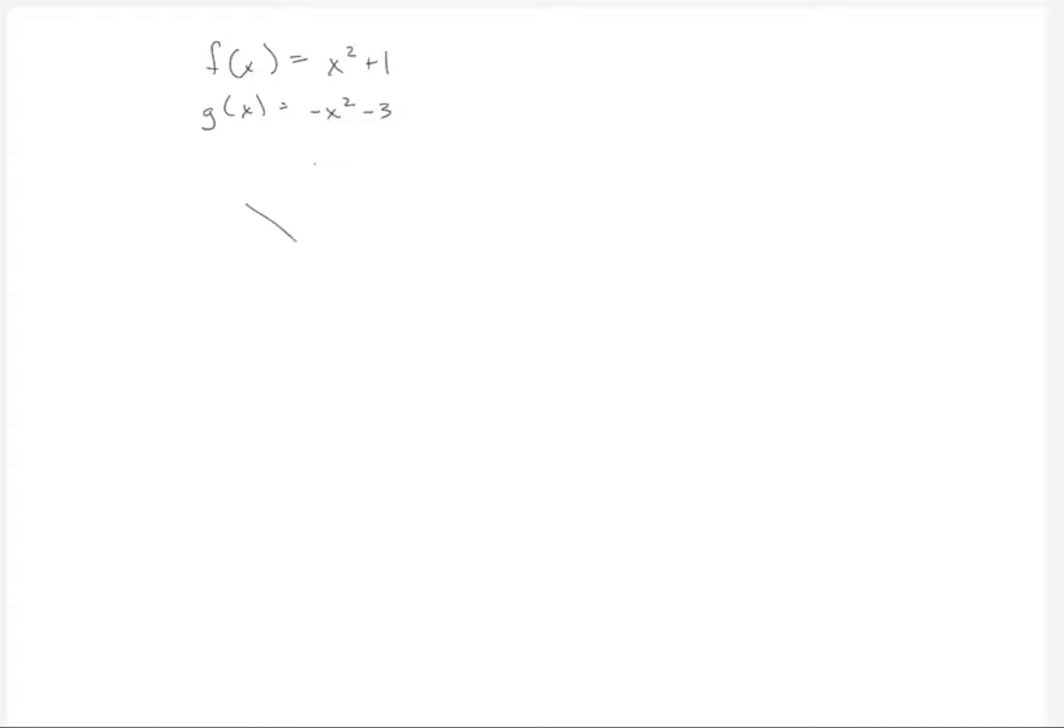So we get this picture where we have these curves. This is like negative x squared plus 1, here's negative x squared minus 3, and we're talking about them here's 2, here's 0.